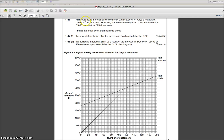If you look at the information, it says figure two shows the original weekly break-even situation for Anya's restaurant based on her forecasts. However, she's realized that her fixed costs - and it's important to underline that or make a mental note of the fact that we're just looking at fixed costs here, not total costs, not variable costs, but fixed costs - weekly fixed costs have increased from £1,800 per week to £2,100 per week. It's worth again just working out how much it's gone up by. It's gone up by a total of £300 per week.